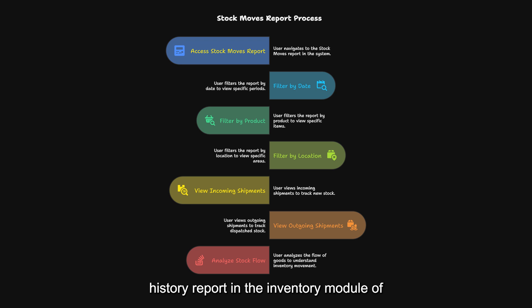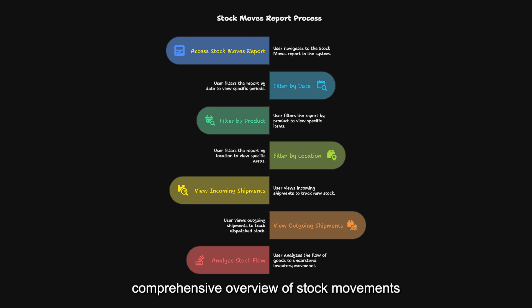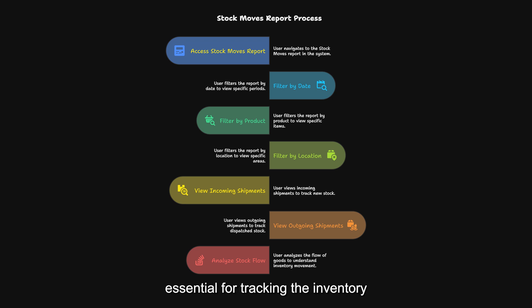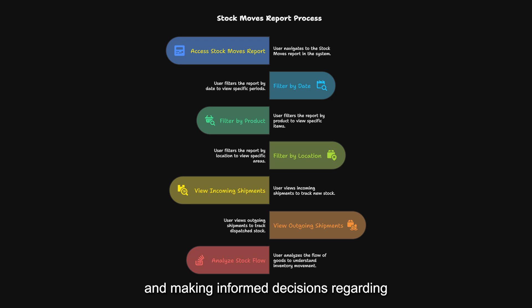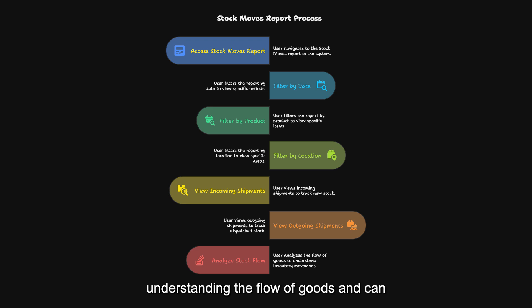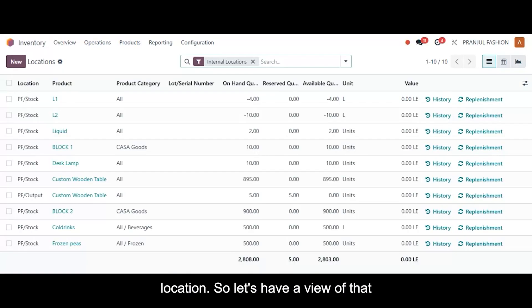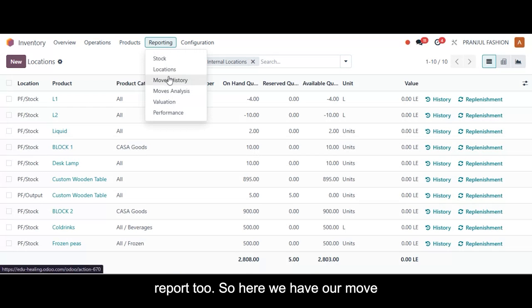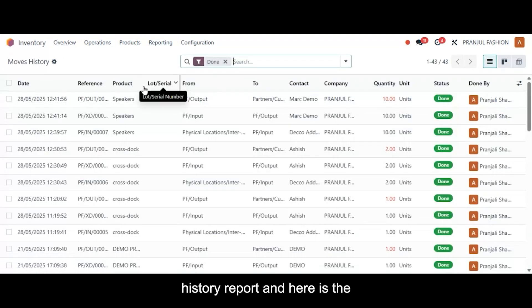Moving to our next report, which is the moves history report. The moves history report in the inventory module of Odoo 18 provides users with a comprehensive overview of stock movements within their organization. This report is essential for tracking inventory changes, understanding stock levels, and making informed decisions regarding inventory management. It helps in understanding the flow of goods and can be filtered by date, product, or location.